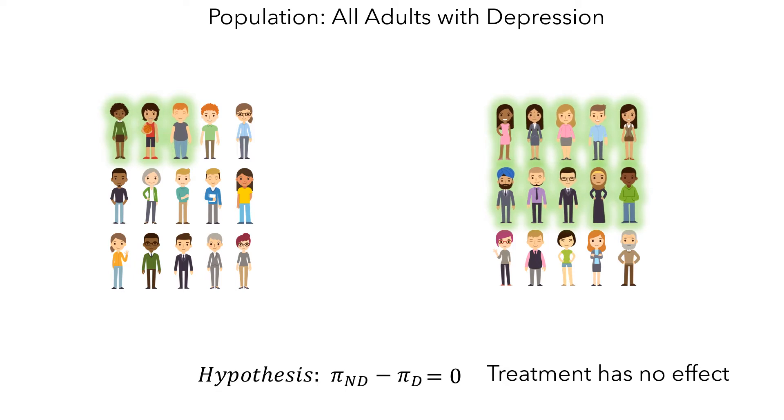So what does this mean for our model? We can see that some people did see an improvement in their level of depression. So if the treatment has no effect, then that means those people were going to improve whether or not they swam with dolphins. And this will be a central idea as we build our model.